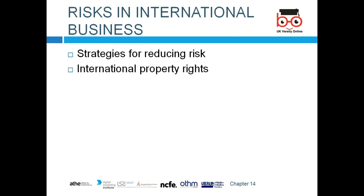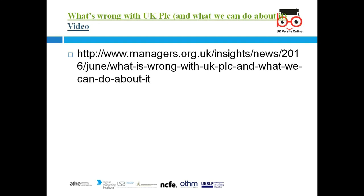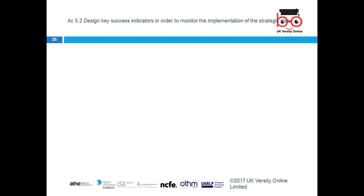Risk in international business strategies for reducing risk: international property rights. Why do US companies have difficulty enforcing intellectual property rights in international markets? Sometimes — particularly in China. Moving to 5.1: you need to look at implementation, the time factor, identify risk at all levels, make strategies to minimize them, and deal with them in a timely manner.